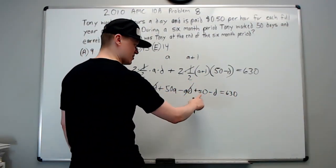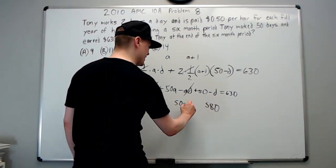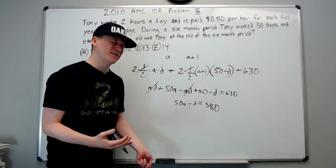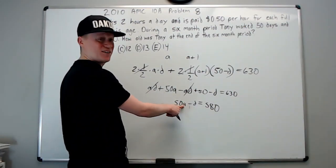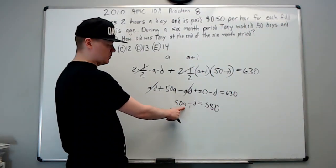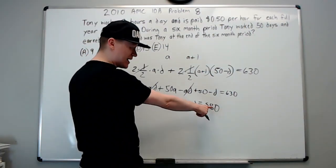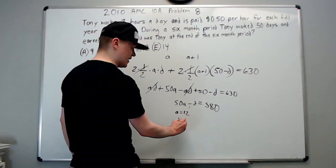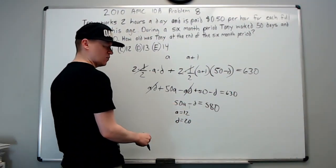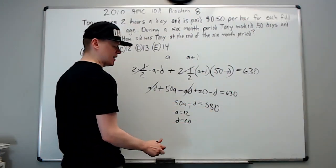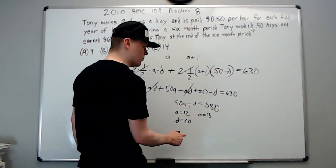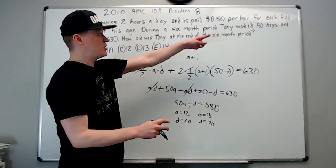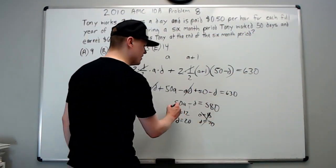The ad's cancel out. Subtract the 50 to get 580, and you get 50a minus d equals 580. Now apply logical reasoning. If he was 11 at the start, this would only be 550, and d would have to be negative. So check 12: it gives 600, and he would have worked for 20 days at that wage. 600 minus 20 is 580. If you try 13, this becomes 650 and you'd have to subtract 70, but he only worked a total of 50 days, which is impossible. So we know this is correct.